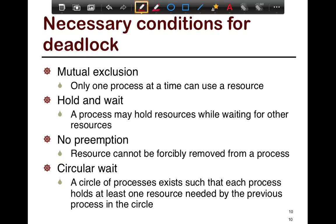The third condition is no preemption: resources cannot be forcibly removed from a process. If preemption was allowed, we would not have deadlock, because we can forcefully grab all the resources needed by some process and allow it to complete. Finally, the circular wait condition: if a circle of processes exists such that each process holds at least one resource needed by the next, you have a loop in your resource graph, and deadlock occurs. If you can prevent circular wait, you can break deadlock.